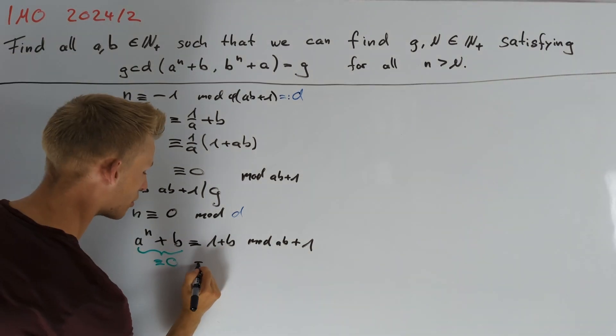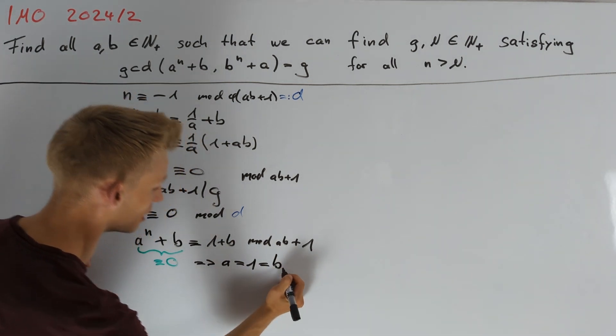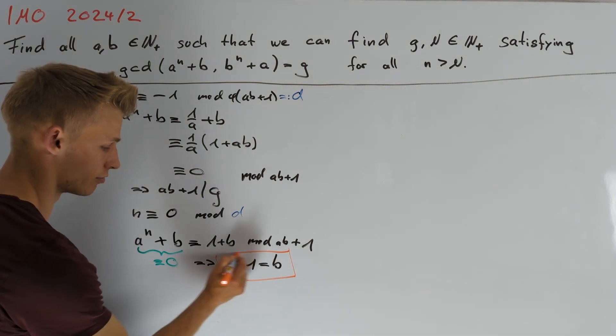Since ab plus 1 divides 1 plus b, which is positive, we conclude that a is equal to 1 and in the same way we get that this is equal to b. We can check that this works and so this is our only solution.